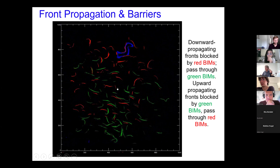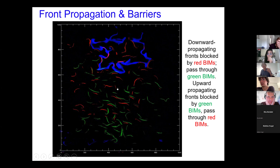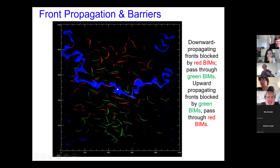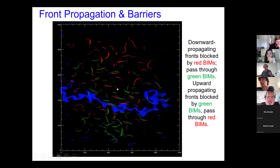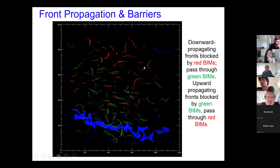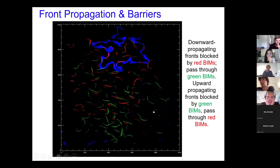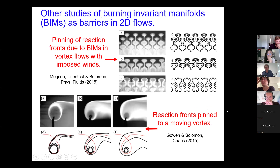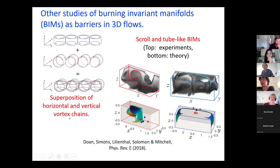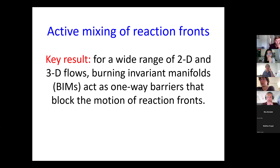One of our arguments — and this is something we're still working on — is that if you want to understand how reaction fronts or swimming microbes move through a flow, you've got to understand this kind of skeleton for the front propagation process. We've studied this in a bunch of other two-dimensional fluid flows, including arrays of vortices with a uniform wind, propagating individual vortices, and three-dimensional fluid flows. In 3D, these barriers become scroll-like or tube-like structures. The bottom line is that this theory works very well for a wide range of two-dimensional and three-dimensional fluid flows.